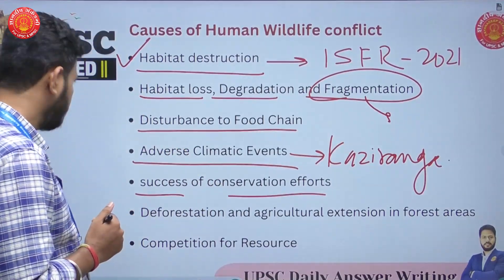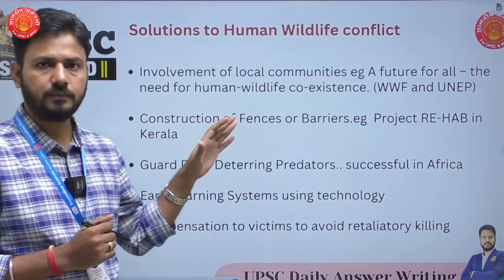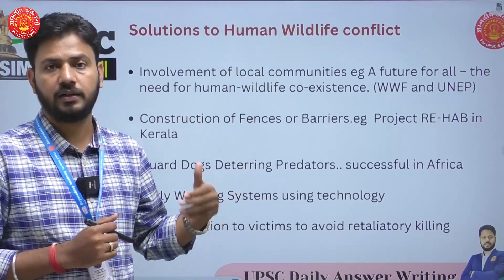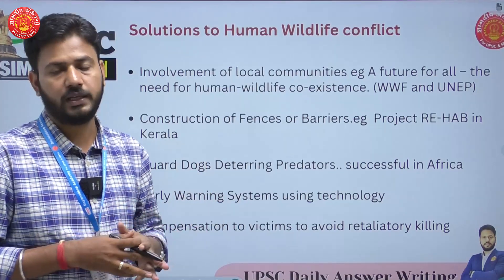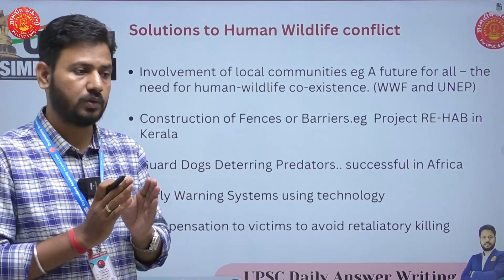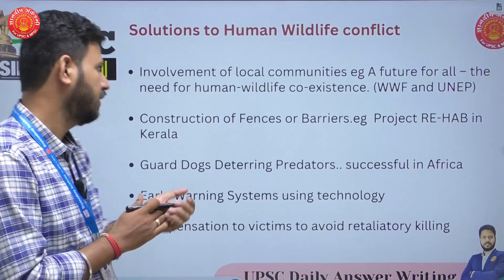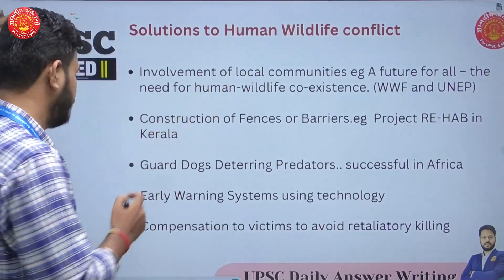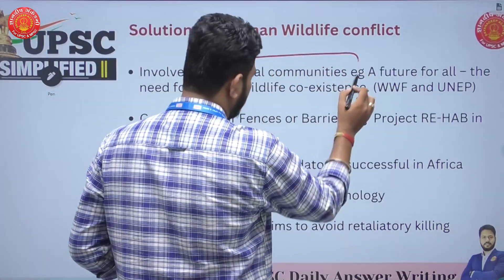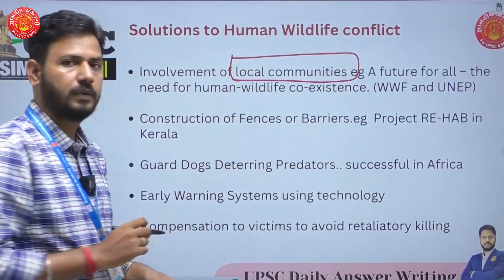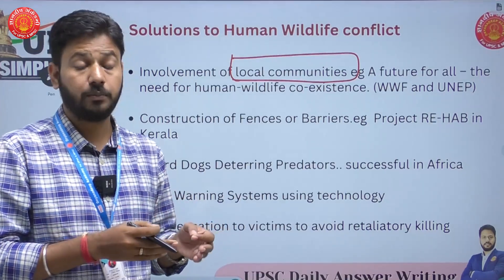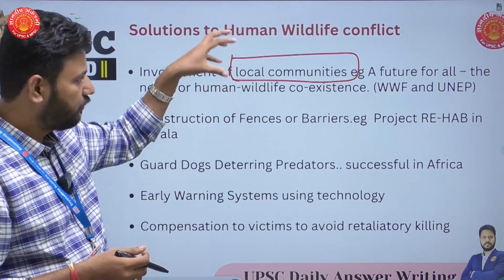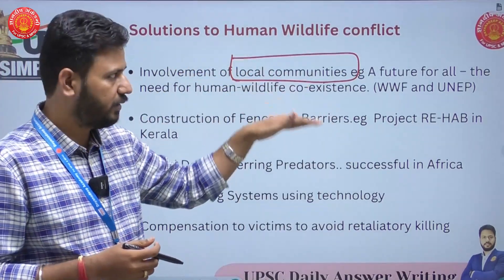When we come to the solutions, you should mention key studies and global incidents if you can, and discuss how to deal with these conflicts. The first and most important solution is the involvement of local communities. This participatory approach to conservation in the environment is always talked about, and in dealing with human-wildlife conflict, involvement of local communities is going to be very important.